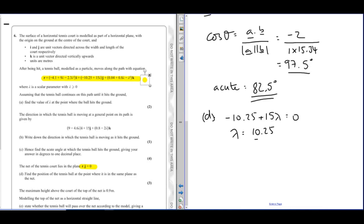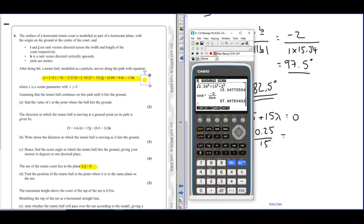Work out lambda from this, so 10.25 over 15 gives us 41 over 60.